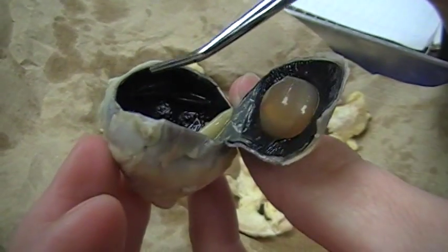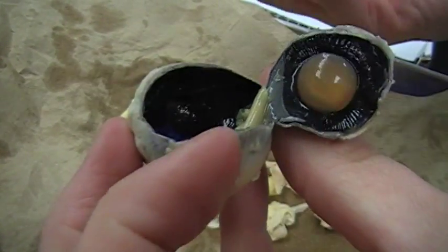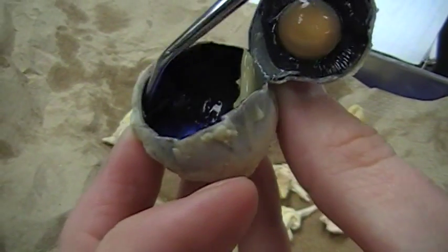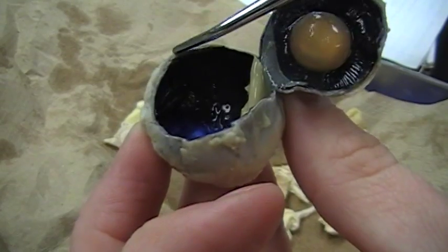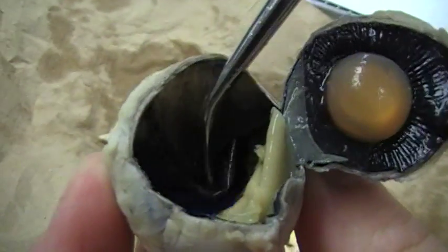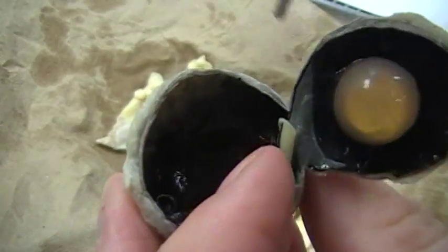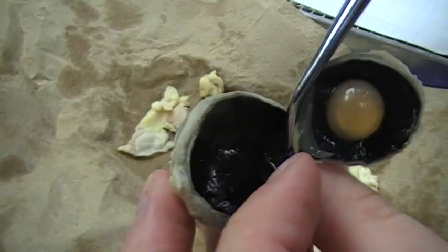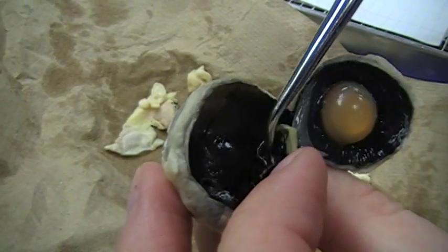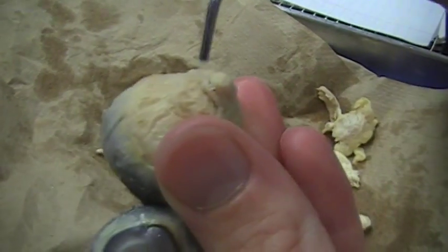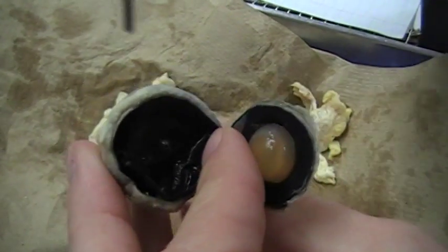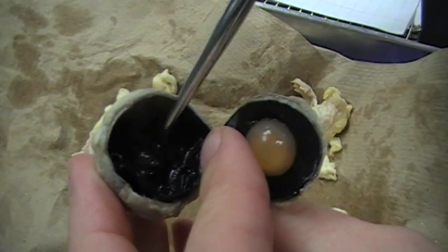And then after that we have the optic disc, which is behind the tapetum fibrosum. This is where the optic nerve leaves the eyeball, and it is known as the blind spot. So here's the optic nerve here. So inside the eye, over here, is the optic disc.